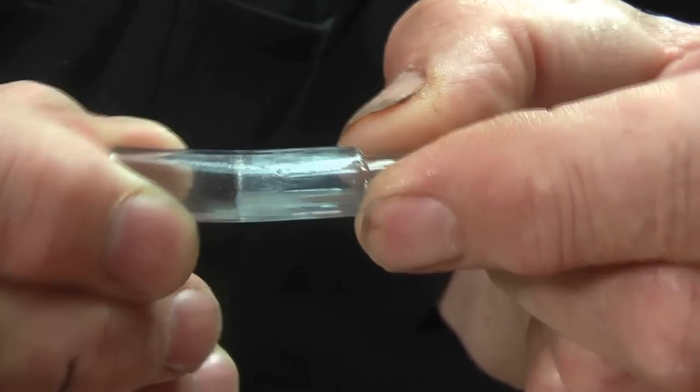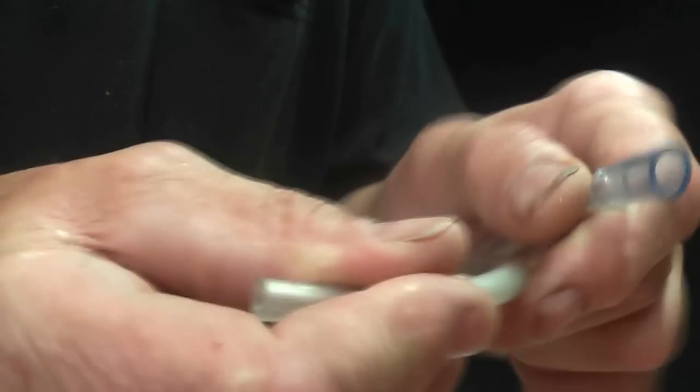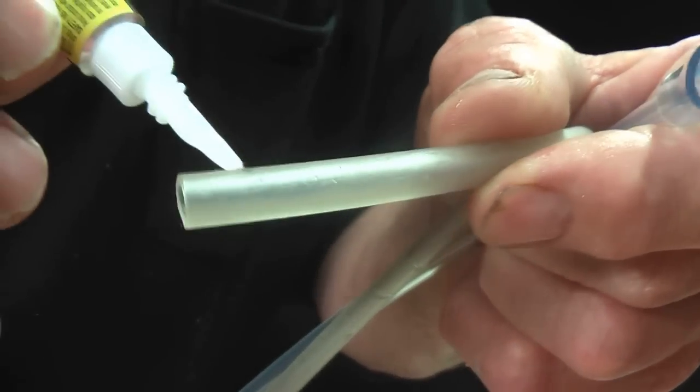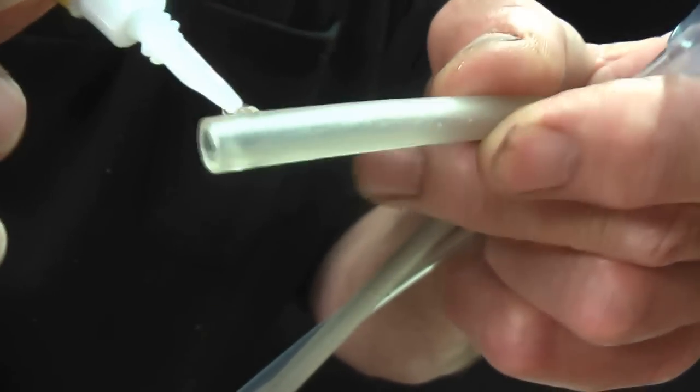Get the other piece of tubing and do exactly the same. Superglue here, and apply it.